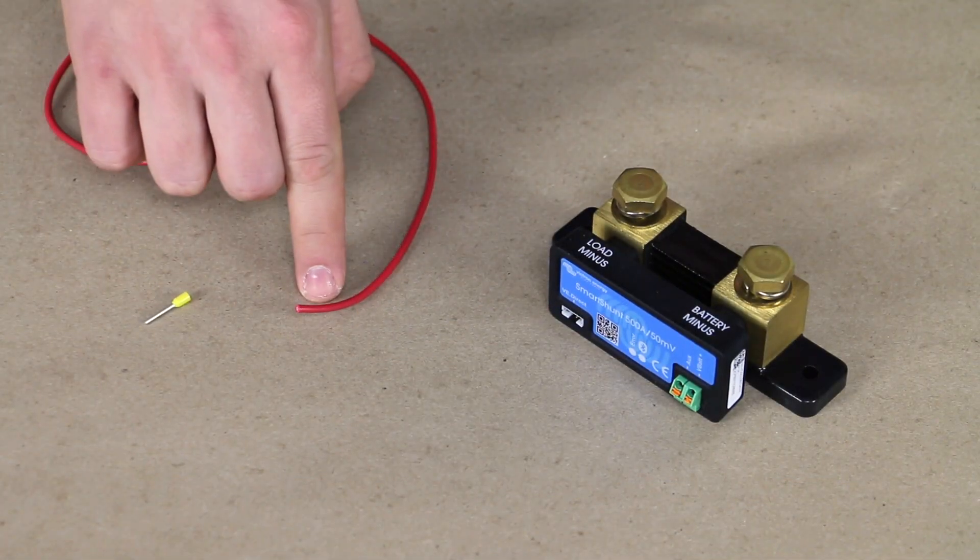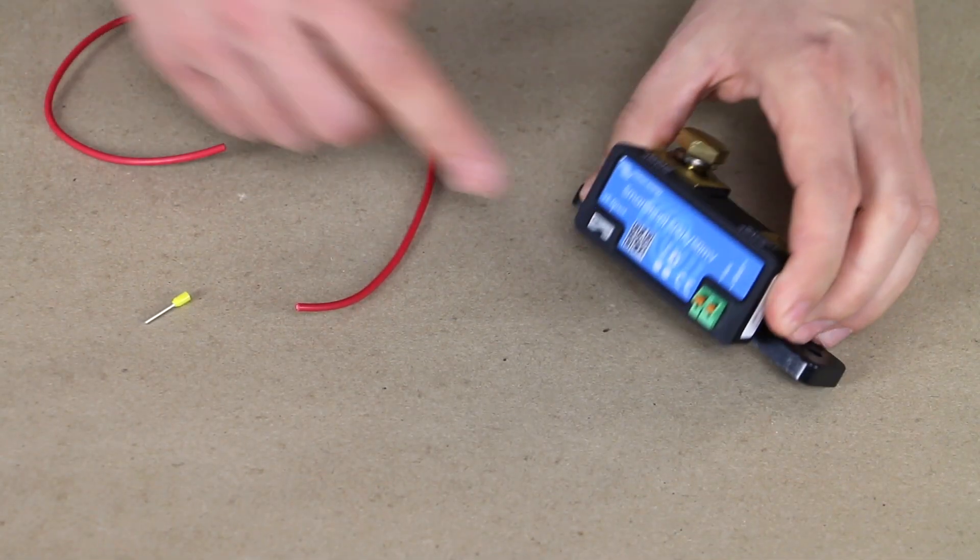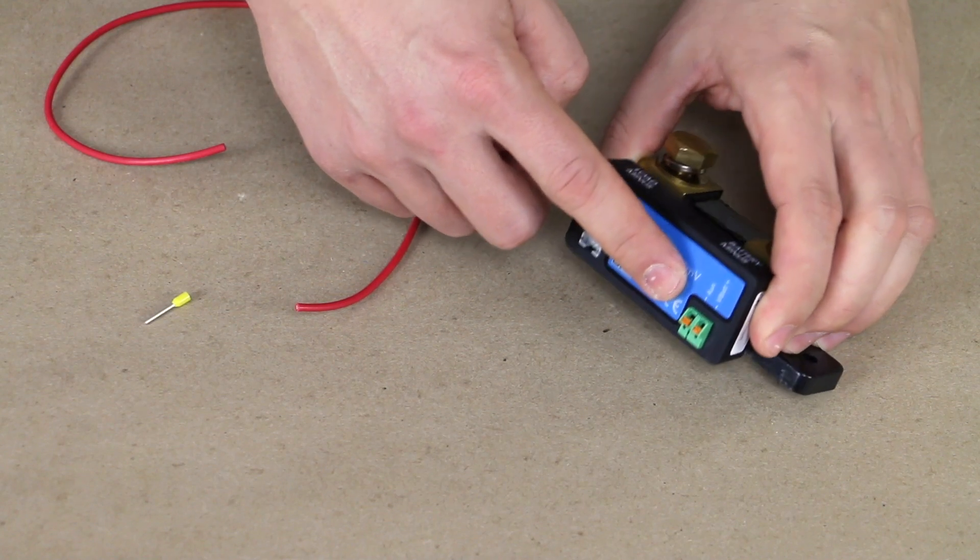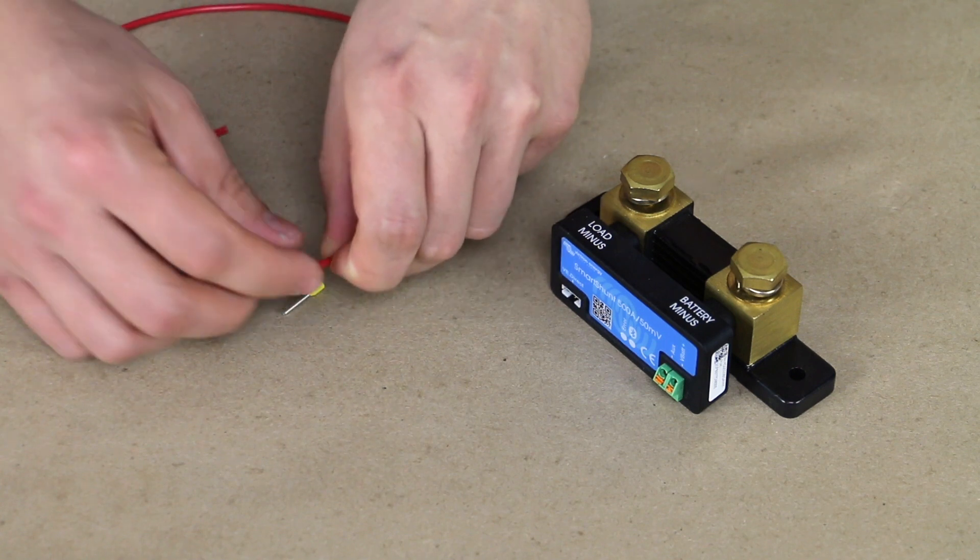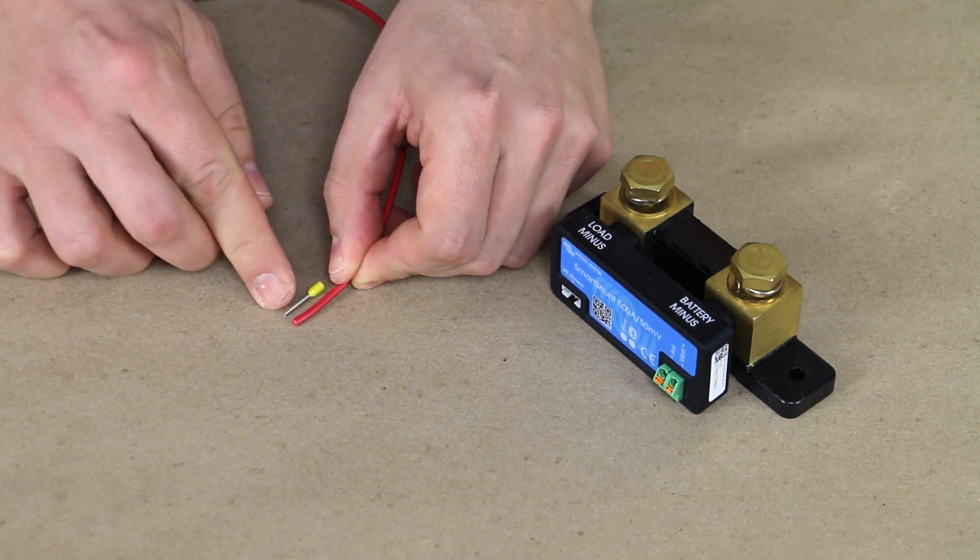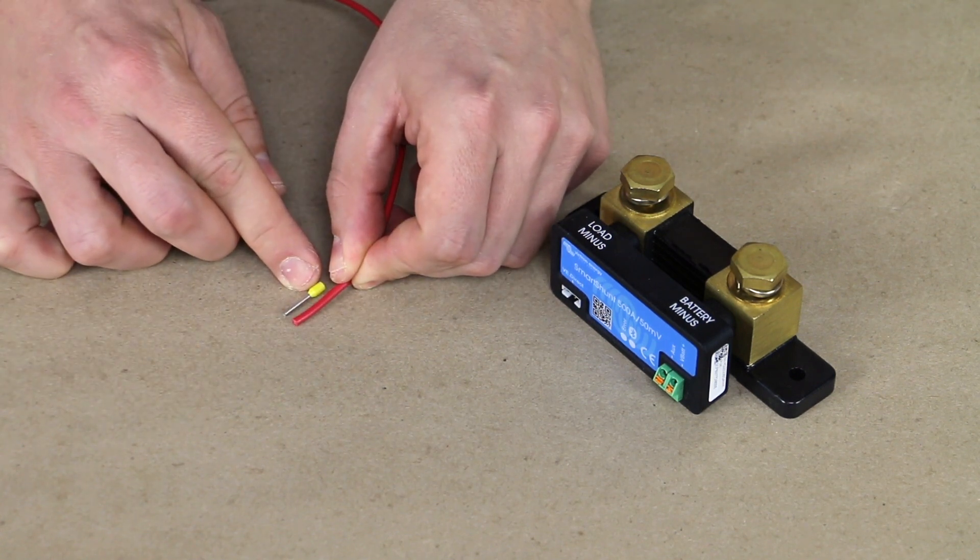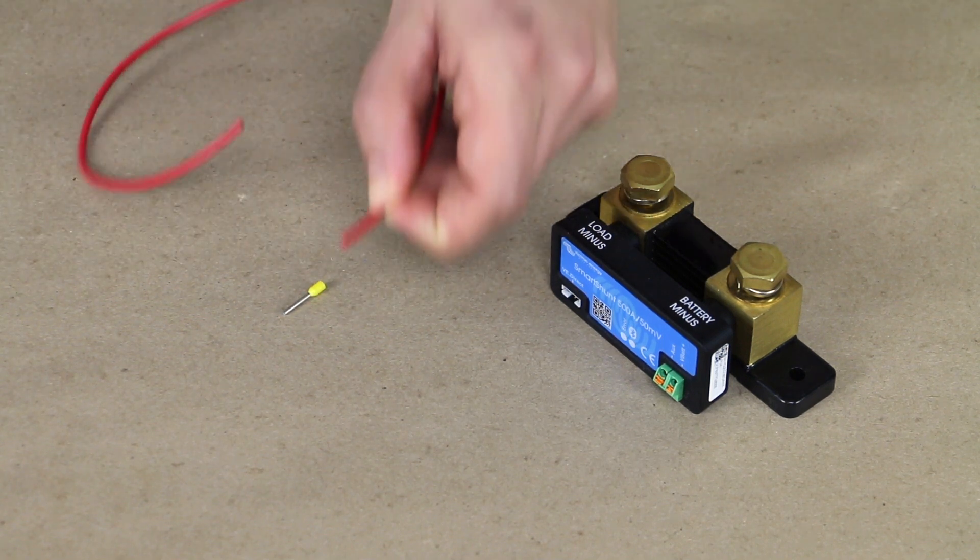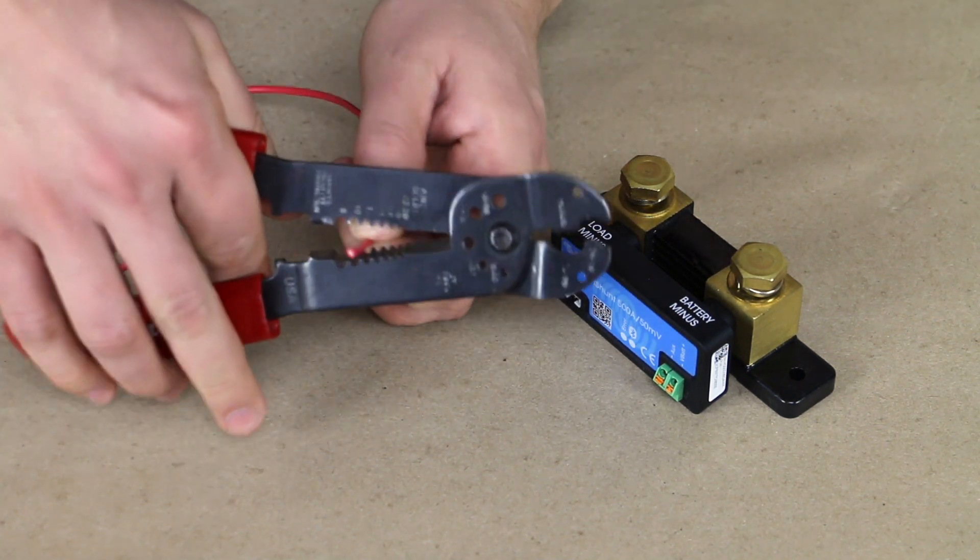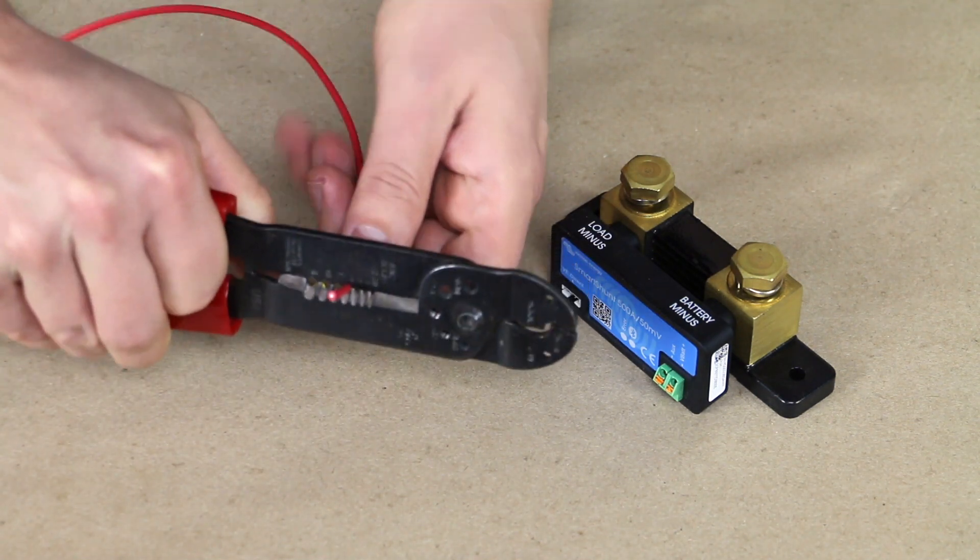All right. So we're going to add this ferrule to this 18 gauge wire. We're going to plug it into these inputs on the smart shunt here. So what we need to do first is kind of gauge how far back to strip our wire. We want to go at least up to the metal tube, probably a little bit further and just mark that with your finger and we'll come in here and strip that back.